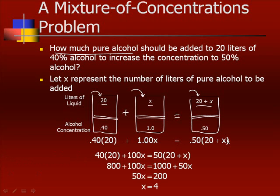Working through that, multiplying, distributing, getting all the x terms on one side, getting x by itself gives us 4, which means we are going to add 4 liters of the 100% solution to get 20 plus 4, or 24 liters of the 50% solution.